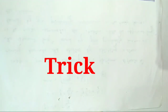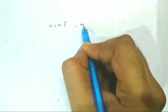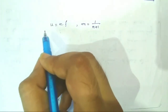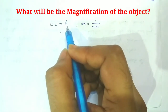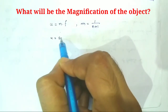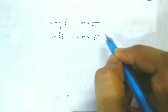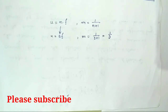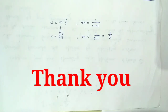Now the small trick: if the object distance is n times its focal length for a mirror, then the magnification will be m equal to 1 divided by (n plus 1). For example, if the object is placed at a distance twice the focal length, then n equals 2, so magnification equals 1/(2+1) equals 1/3. In the next class, we will solve different previous years' mathematical problems in detail. Thank you for watching — please hit the like button, share with your friends, and subscribe to my channel.